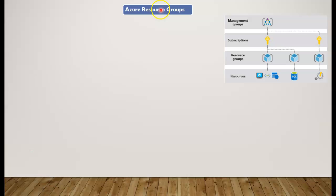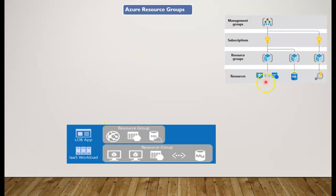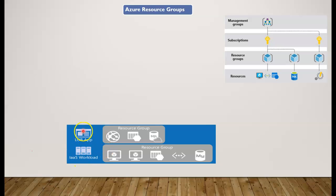Let's jump into understanding resource groups. When you drill down, a resource group could contain a line-of-business application with one website, storage, and a SQL database — all three different resources pulled into one resource group. For an infrastructure-as-a-service workload, you might group VMs, storage accounts, and MySQL into another resource group. So your company could have two different resource groups: one for the LOB app and one for IaaS workloads.